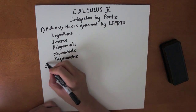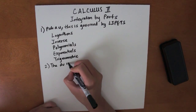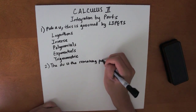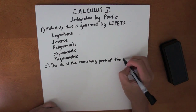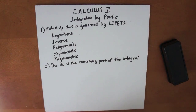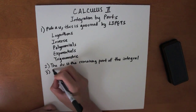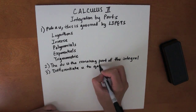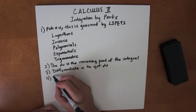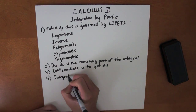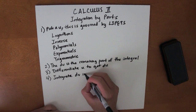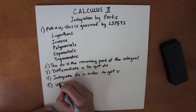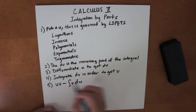Then, the dv is just the remaining part of the integral. So then we differentiate u to get du. Then we integrate dv in order to get v. Finally, we use the formula u times v minus the integral of v times du, and then simplify.